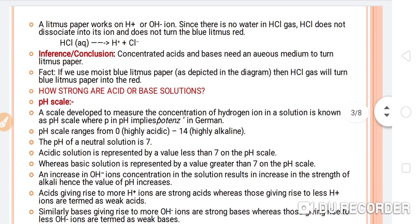Important fact: if we use moist blue litmus paper, HCl gas will turn it red. In the first attempt the experiment used dry litmus paper, so it did not change color. In the second attempt, when the litmus paper was dipped in water first, it turned red — because the water provided the aqueous medium. So a medium is required to test acidic or basic behavior.